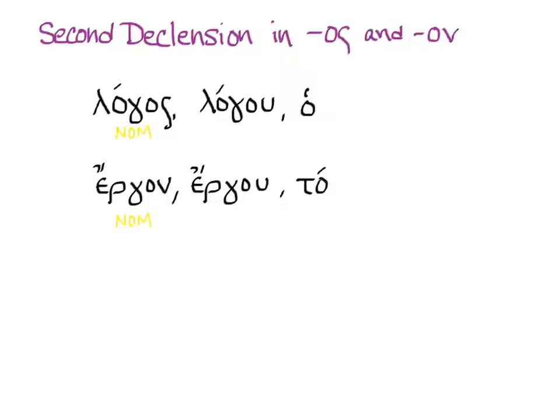Just like in vocabulary lists, glossaries, and dictionaries, what you get when introduced to a word is the nominative singular, the genitive singular, and the article, which is how we conventionally show whether a noun is masculine, feminine, or neuter. Most but not all second declension -os nouns are masculine, and all second declension -on nouns are neuter. So we see logos with the masculine article ho, and ergon with the neuter article to.